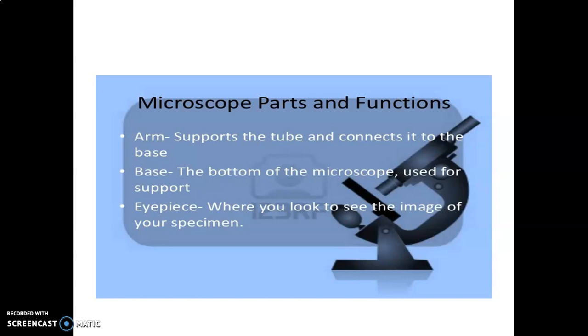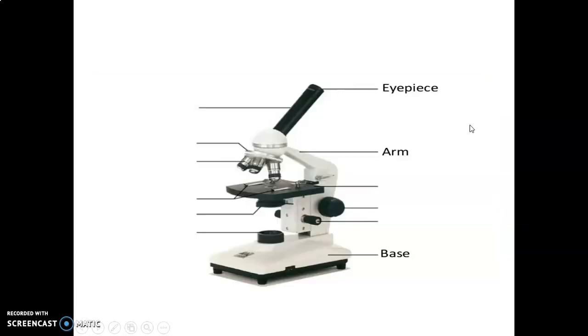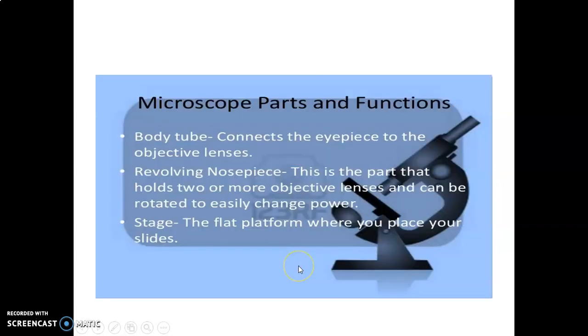It has various functions. You have the arm that usually supports the tube and connects the tube to the base. This is the arm, this is the base, which is the bottom that gives support. Then you have an eyepiece where you look to see the image.